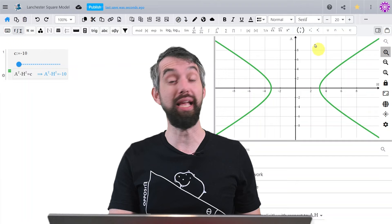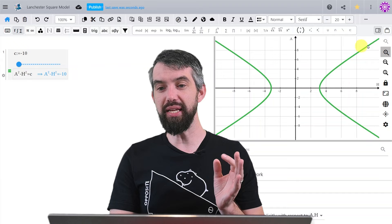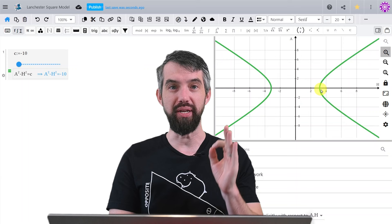And what we can see is that for this particular choice of the constant, and I've made the alpha and the beta both be one here for simplicity, we see that the plot comes along and the humans end up winning. They have a non-zero amount at the time when the aliens have gone down to zero. The humans have won.